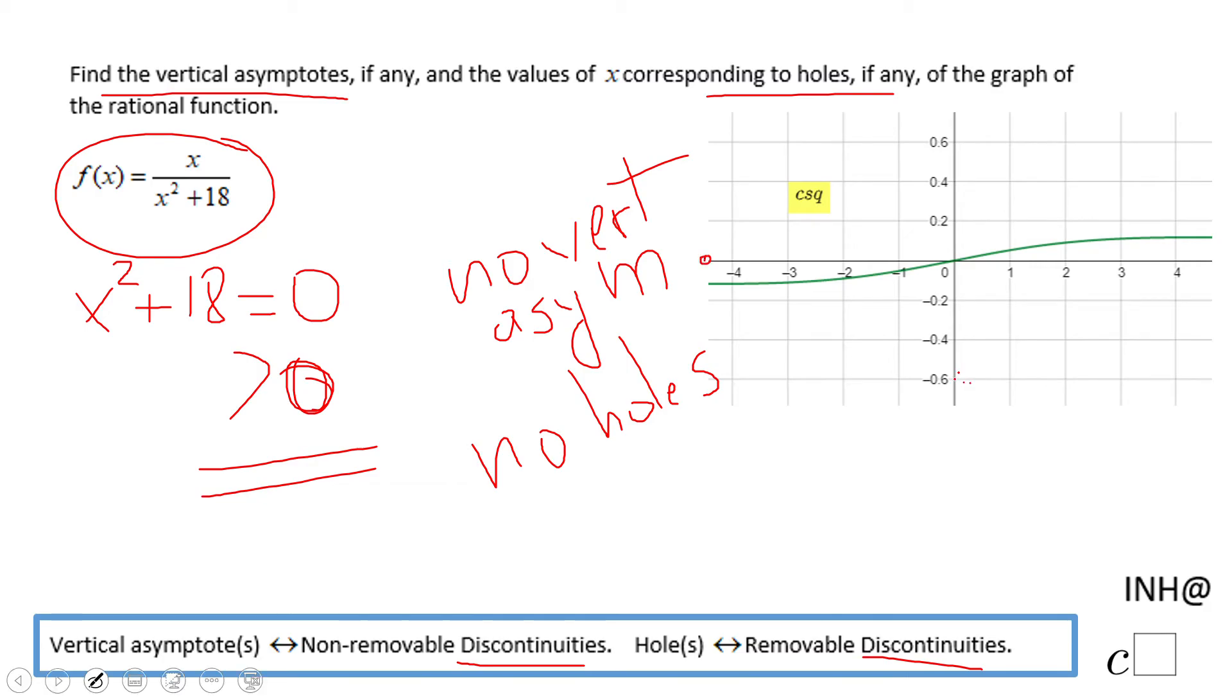It's going from negative 4.5 to 4.5 and goes by one. And for the y-axis, it goes from negative 0.7 to positive 0.7 and goes by 0.2.